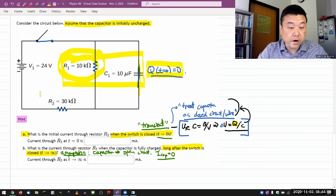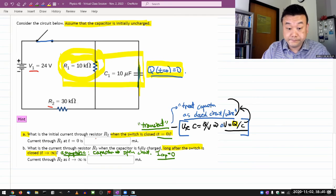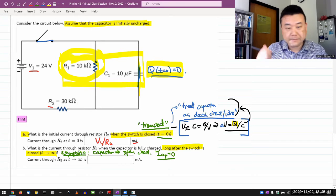So, initial current through R2 will be, simply be given by the V1 divided by R2. And watch out the unit, you know, milliampere. So, that's it. I'm done.